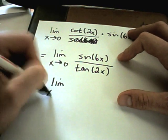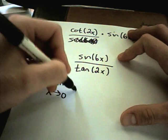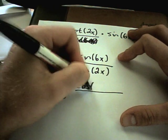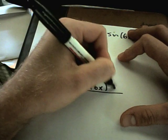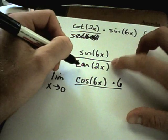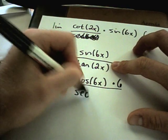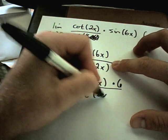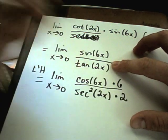So now I've got the limit as x approaches 0. The derivative of sine is going to be cosine of 6x times 6. The derivative of tangent is secant squared of 2x times 2.